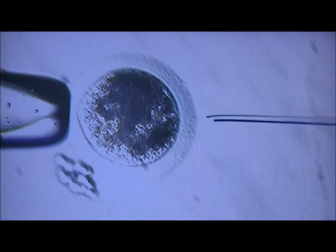Then we move to the egg drop where the egg is held in place by a holding pipette, rotated until the polar body, which is half the chromosomes from the maternal egg, is placed out of the way.